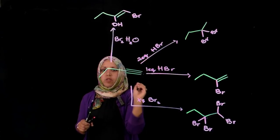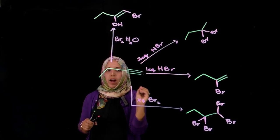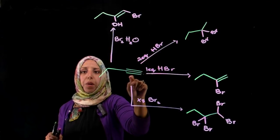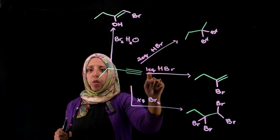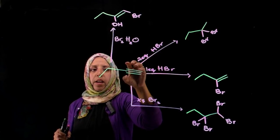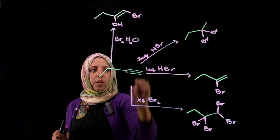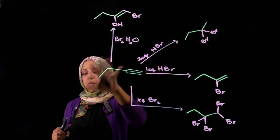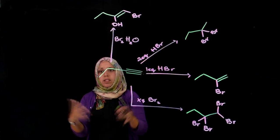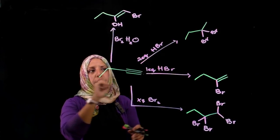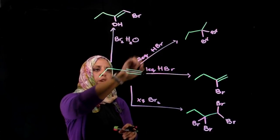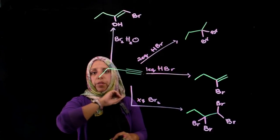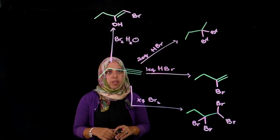Those reagents are very similar to addition reactions to an alkene, except that you're doing the reaction twice because you have two pi bonds. That depends on whether you have one equivalent or two equivalents. An excess amount is really the same as two equivalents, unless you have another pi bond somewhere — then it's going to add to that pi bond as well. If you have an excess amount, it will react with all the pi bonds present.